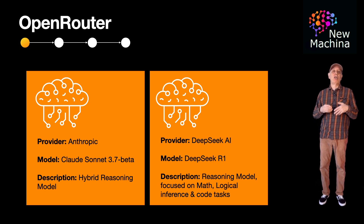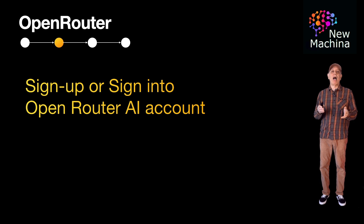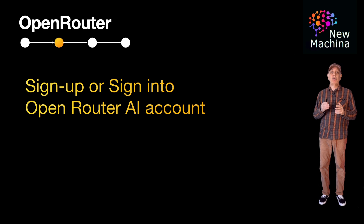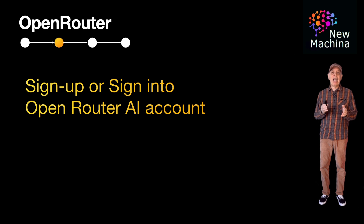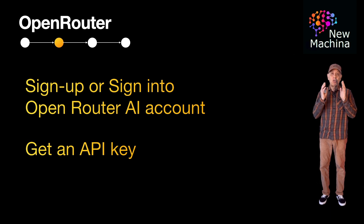Before we jump into the code examples, there are a few things you will need if you want to work along with me in this video. You will first need to get your OpenRouter API key. Go to OpenRouter.ai in your browser. If you don't already have an account, sign up using your email address or a supported authentication method. If you have an account, just go ahead and log in. Next, navigate to the API key section in your account settings, click Generate API key to create a new key, and copy and store your key securely.